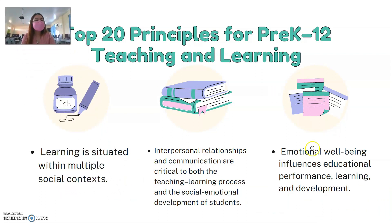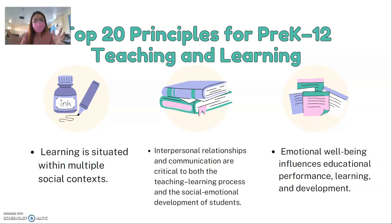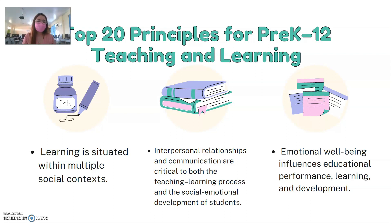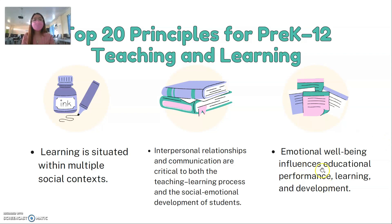Emotional well-being influences educational performance, learning and development. Our classroom should be open for all. We should have a positive relationship with our students and encourage positive peer relationships as well. Once students are emotionally stable in our classroom — if they feel safe, comfortable, and part of the family inside our classroom — this will eventually have a positive impact on how they learn. They will become more eager to learn and more encouraged to participate in class discussion, knowing that you as their teacher will listen to them and accept them for who they are.